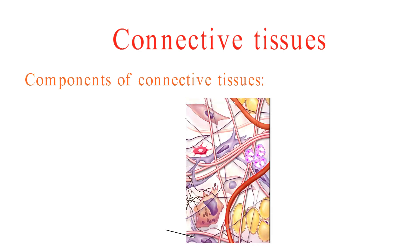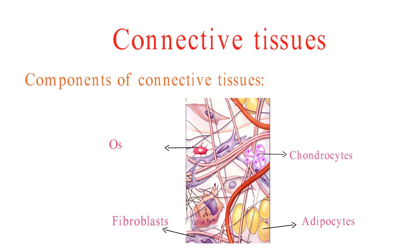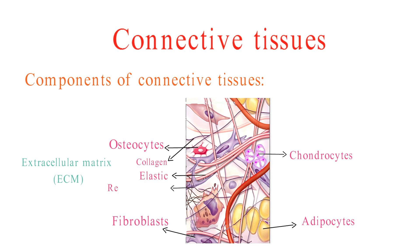Now, let's take a closer look at what makes up connective tissues. Connective tissues contain various cell types, including fibroblasts, which produce the extracellular matrix; adipocytes, responsible for fat storage; and chondrocytes and osteocytes, found in cartilage and bone, respectively. The extracellular matrix, or ECM, is a complex network of proteins and carbohydrates surrounding cells, consisting of protein fibers like collagen, elastic, and reticular fibers, as well as a gel-like ground substance composed of proteoglycans and glycoproteins.